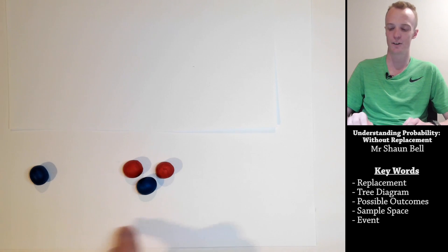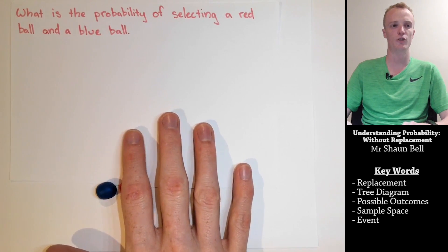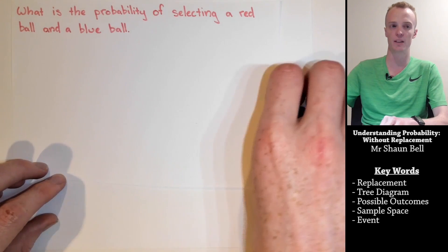So, this video is going to concentrate on selecting two balls total, one at a time, but we're not going to replace the ball after each selection. Let's keep that in mind as we answer the following question: What would the probability be of selecting a red ball and a blue ball in any order? Now, we can use tree diagrams to help assist us with this process.